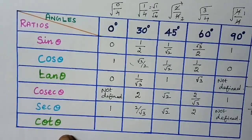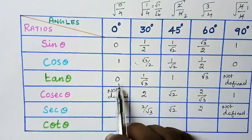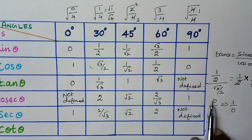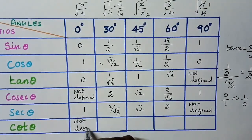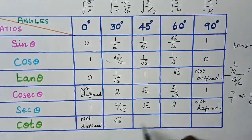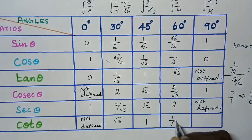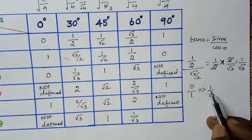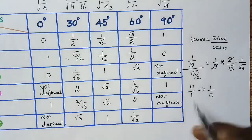Next, cot theta. Cot theta is the reciprocal of tan theta. So tan 0 degree is 0, that is 0 by 1, and the reciprocal of 0 by 1 is 1 by 0 which is not defined. Next, reciprocal of 1 by root 3 is root 3 by 1 which is root 3. Next, reciprocal of 1 is 1, and reciprocal of root 3 is 1 by root 3. For not defined, since that means 1 by 0, the reciprocal is 0 by 1 which is 0.